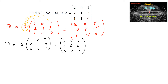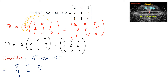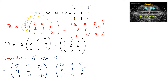Now consider A squared minus 5A plus 6I. A squared is [5,−1,2; 9,−2,5; 0,−1,−2], minus 5A which is [10,0,5; 10,5,15; 5,−5,0], plus 6I which is [6,0,0; 0,6,0; 0,0,6].